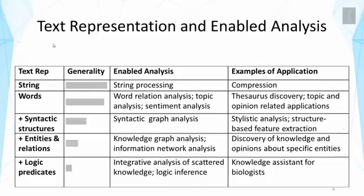This table summarizes what we have just seen. The first column shows the text representation. The second visualizes the generality of such representation, meaning whether we can do this kind of representation accurately for all the text data, or only some of them. And the third column shows the enabled analysis techniques. And the final column shows some examples of application that can be achieved through this level of representation.